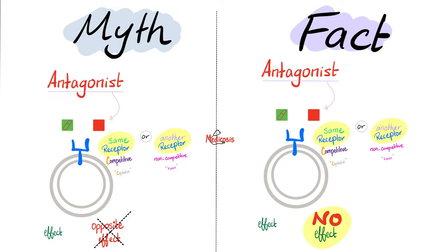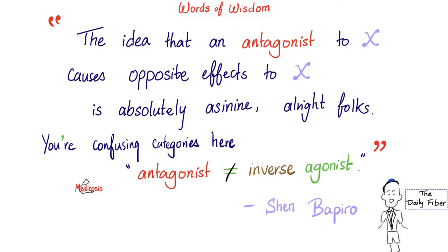Unfortunately, many students think that an antagonist will cause the opposite effect. Not true. The antagonist will cause no effect, zero, zip, null, nil. Even Ben Shapiro can tell you, quote, the idea that an antagonist to X causes opposite effect to X is absolutely asinine. Okay, folks, you're confusing categories here. An antagonist is not the same as inverse agonist, okay? My wife is a doctor and I'm a pharmacist now.